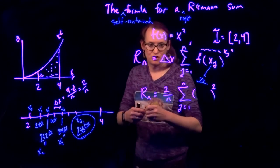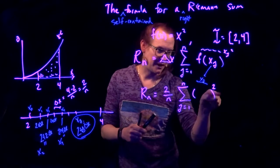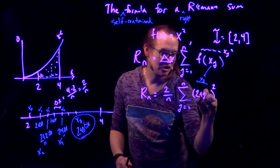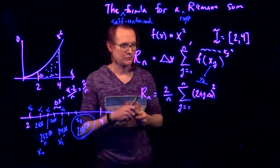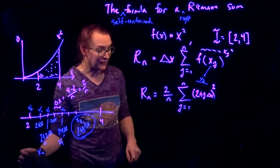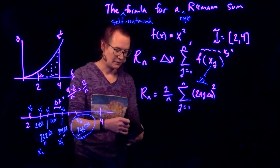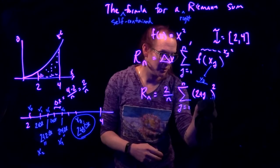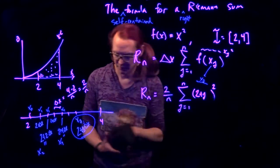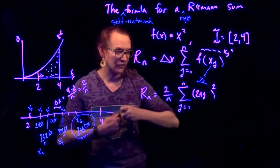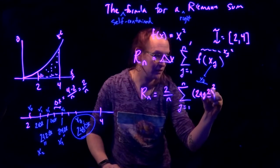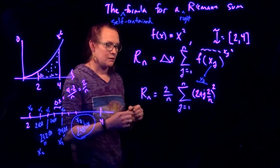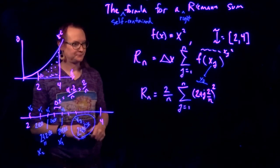x sub j is 2 plus j times delta x. 2, I'm probably going to have to erase that. I don't think I'm going to have enough room. 2 plus j times delta x. But we know what delta x is. We totally know what delta x is. We already figured that out. Delta x was 2 over n.